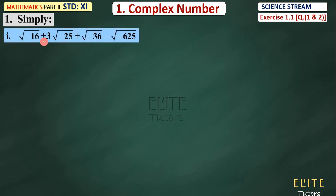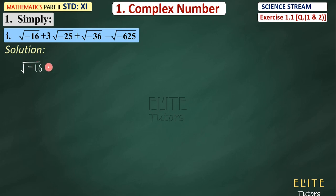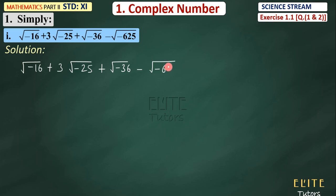So now let's do Exercise 1.1, Question Number 1 and 2 for Science Stream Mathematics Part 2, Chapter 1. First question: find the value of √(-16) + 3√(-25) + √(-36) − √(-625). You have to find out or simplify and give the answer.